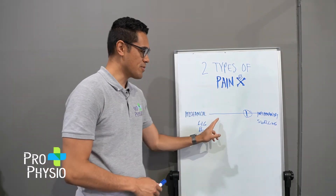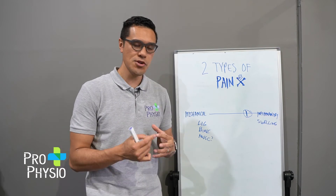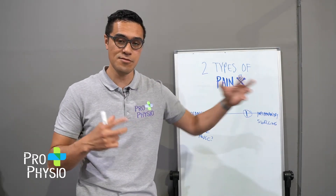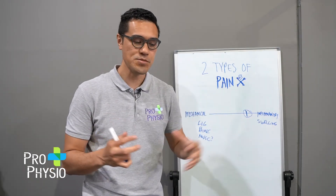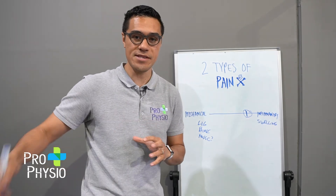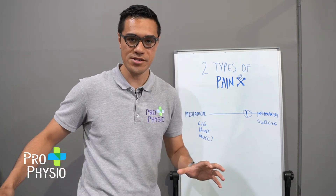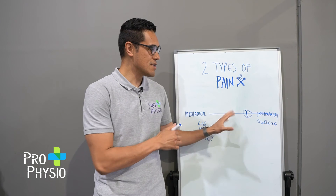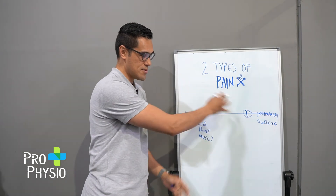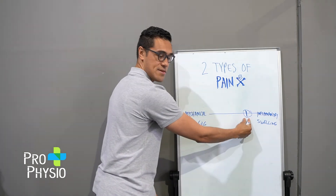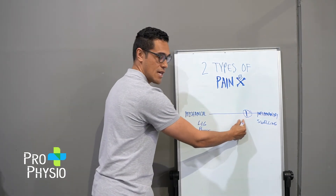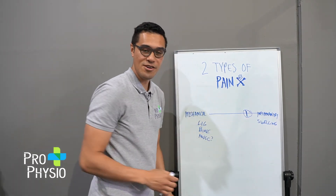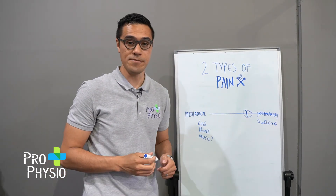Mechanical pain, on the other hand, may not be so bad first thing in the morning because you've slept overnight and been resting. But as you use it more throughout the day it gets worse. So this is a bit of an introduction to the two types of pain, and if you think about this dial, it can dial up and down depending on where you are and what you're doing.